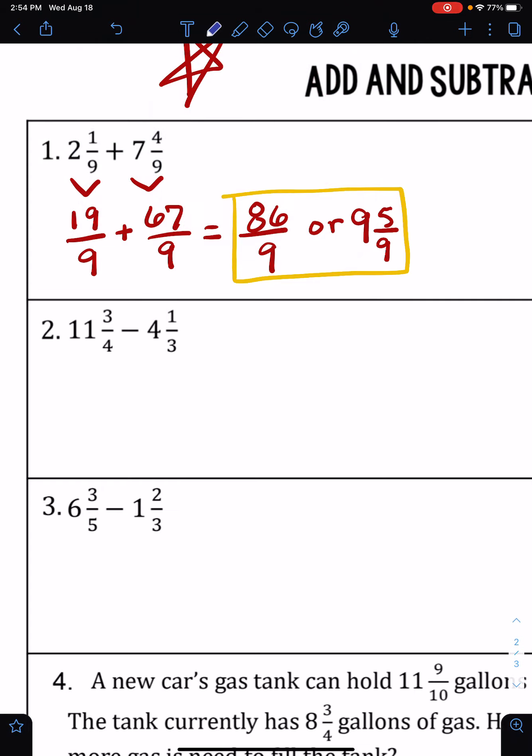This next one: 11 times 4 is 44 plus 3 is 47. 4 times 3 is 12 plus 1 is 13. I need common denominators. A good one would be 12. So on the left, since I have to multiply 4 times 3 to get 12, I'm going to do 47 times 3 to get 141. And since 3 times 4 gives me 12, I'm going to do 13 times 4 to get the new numerator of 52.